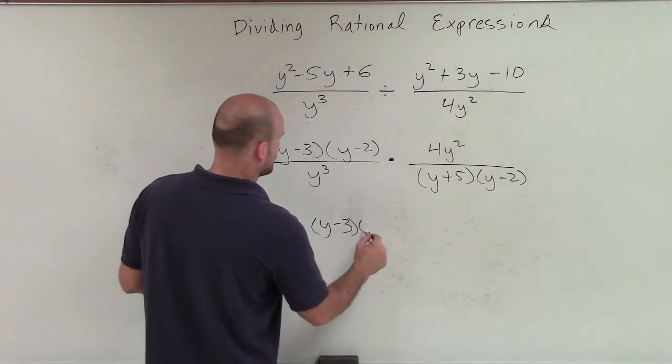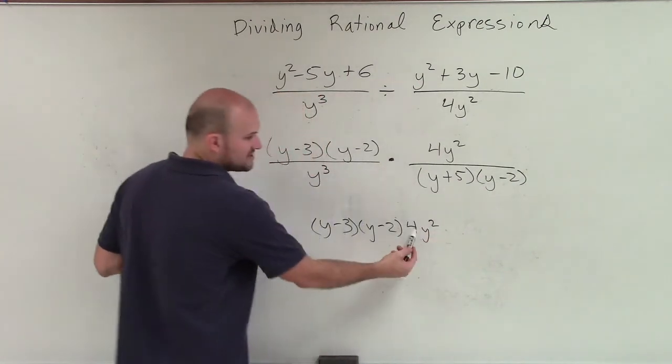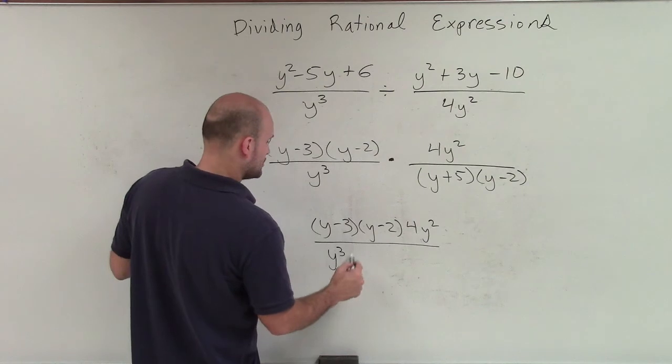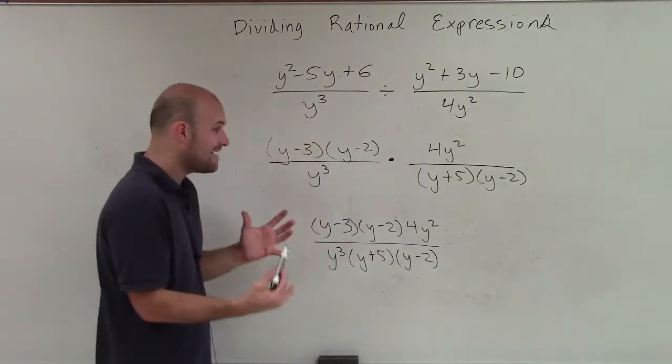Right? It's just multiplied, so it's 4y squared over y cubed times y plus 5 times y minus 2. We can just rewrite everything together.